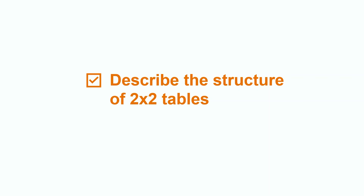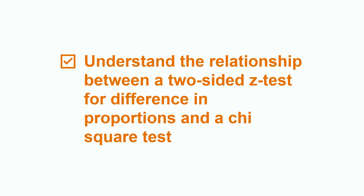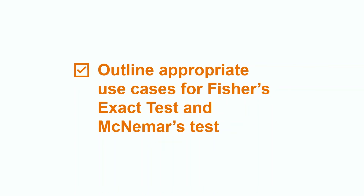Today we described the structure of 2-by-2 tables. We also learned about the relationship between a 2-sided z-test for difference in proportions and a chi-square test. Lastly, we learned about when to use Fisher's exact test and McNemar's test. Thanks for watching, and please be sure to check out other videos about statistics lessons and applications here on Chegg.